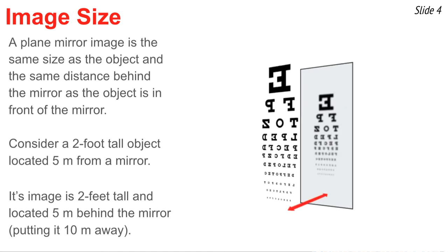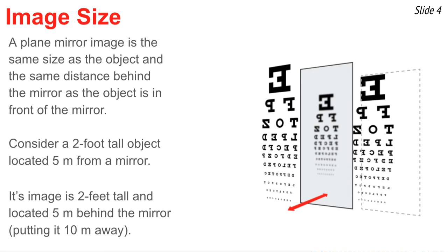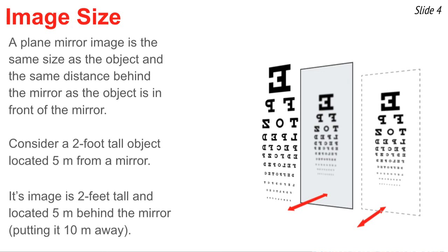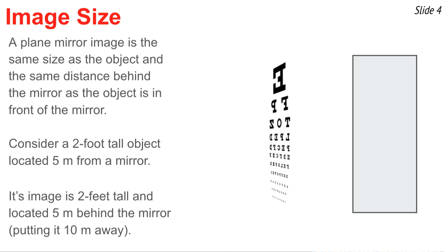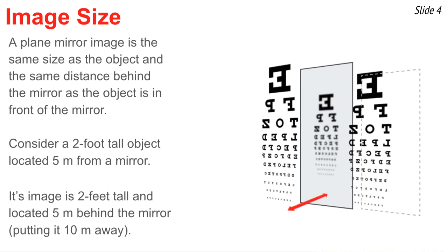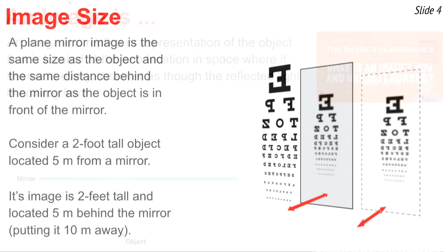But if you continue to move that object backwards, that second eye chart backwards, what you would begin to see is once you get it to the mirror location, that it's actually larger than the image itself. If you keep moving it backwards, finally you can match the size of the second eye chart to the size of the image of the eye chart, and that happens when you're as far behind the mirror as the object is in front of the mirror. So the H of the image is equal to the H of the object, and you can prove it if you place the second identically sized eye chart exactly as far behind the mirror as the object is in front.